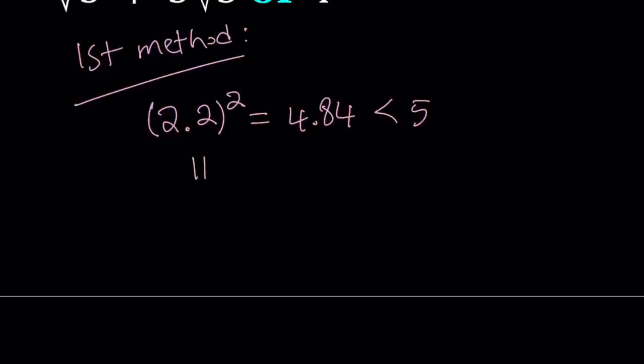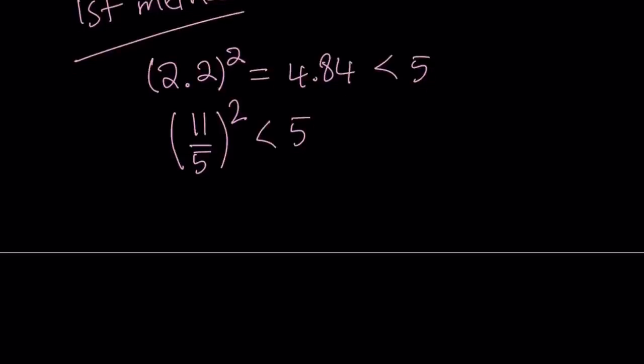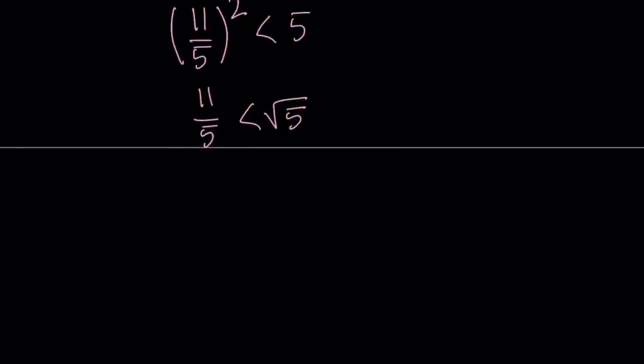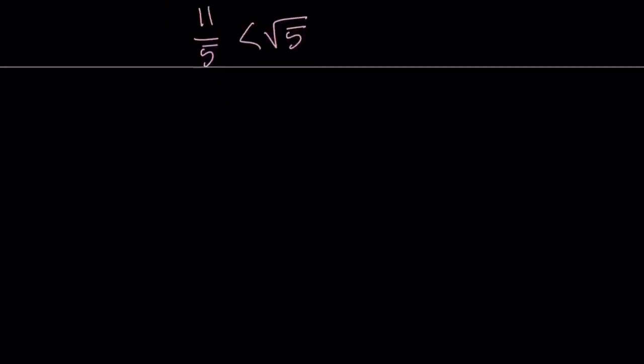So, I can write this as 11 fifths and then square it and I know that this is less than 5. Let's go ahead and square root both sides by using the positive square roots, of course, and this is going to give us the following. So, this is really nice because I can multiply both sides by 5 and that gives me, just flip-flop, 5 root 5 is going to be greater than 11.